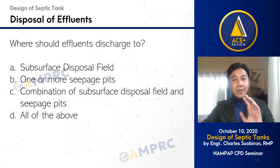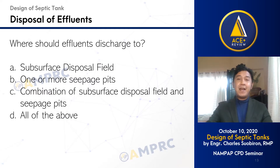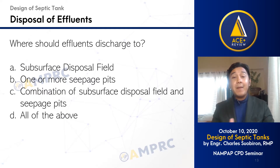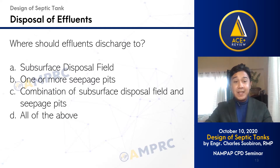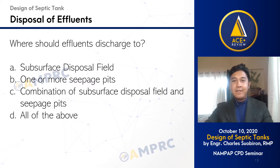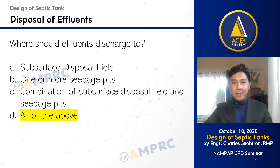Aside from those three bases of septic tank capacity, we must also note where to dispose the effluents coming from our septic tanks. Where should effluents discharge to? A. Subsurface disposal field. B. One or more seepage pits. C. Combination of subsurface disposal field and seepage pits. D. All of the above. The right answer is all of the above. Effluents from septic tanks must be disposed accordingly — towards options A, B, or C.